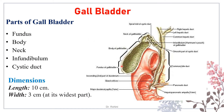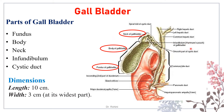The parts of the gallbladder are: the fundus — the expanded, blind, free end projecting from the inferior border of the liver, directed downwards, forwards and towards the right, completely surrounded by peritoneum. From the fundus up to the neck is the body of the gallbladder. Then there is the neck — a very small, somewhat tortuous, S-shaped part connecting the body to the cystic duct. The gallbladder is approximately 10 centimeters in length and 3 centimeters in width at its widest part.